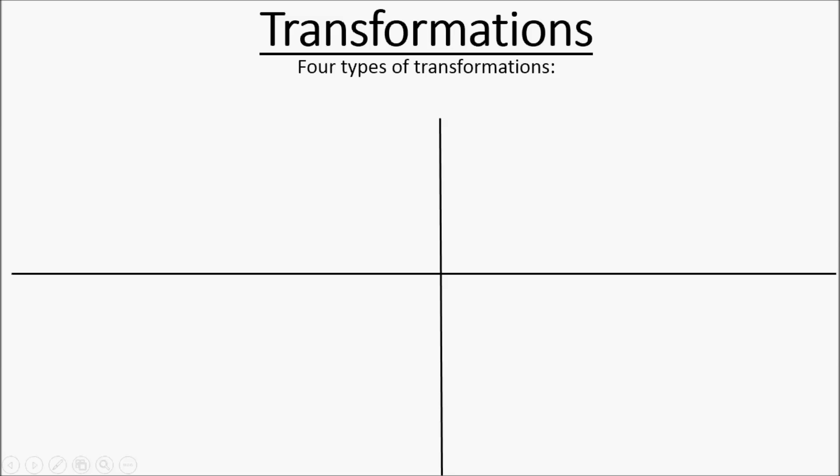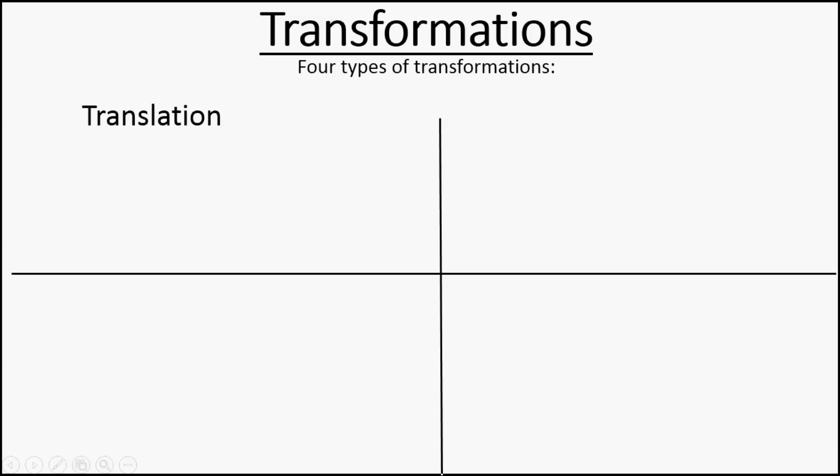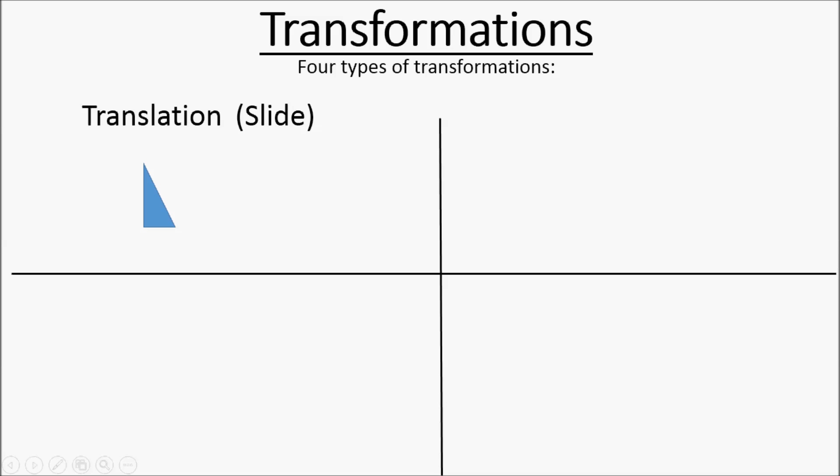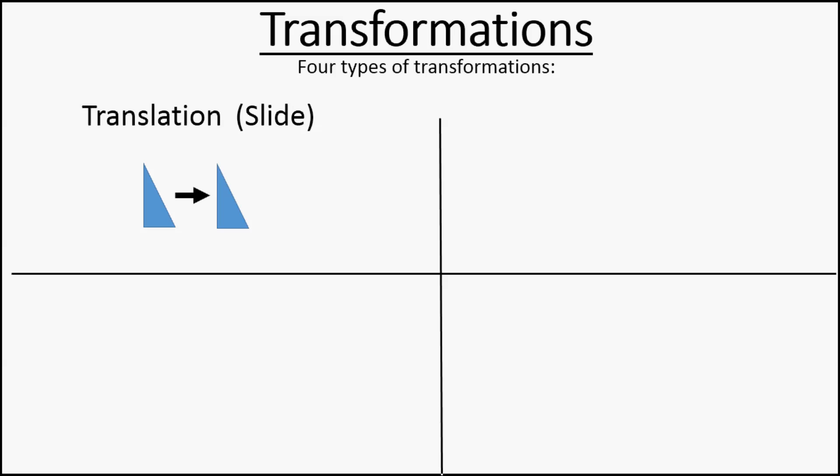Transformations. There are four types of transformations. There are translations — another word for translation is slide. That's basically when you take a shape or a point or an object and just move it. You can move it up, down, right, or left, but this one's just being moved to the right.